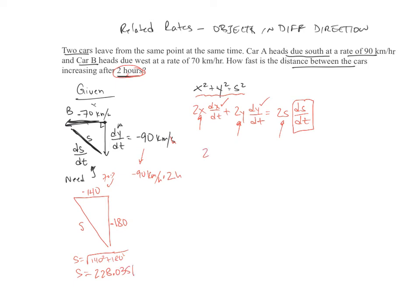So we've got 2 times X, which is 140. We determined that. And then DX/DT, which is 70. And if we go ahead and put the units on these, this would be 70 kilometers per hour, and this would be 140 kilometers. So we have kilometers squared per hour.